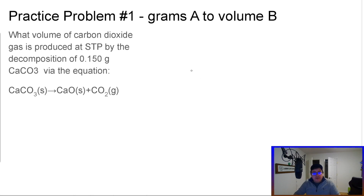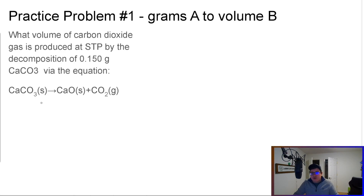What volume of carbon dioxide is produced at STP by the decomposition of 1.15 grams of calcium carbonate? The equation below is already balanced. We know our mass is 0.15 grams.